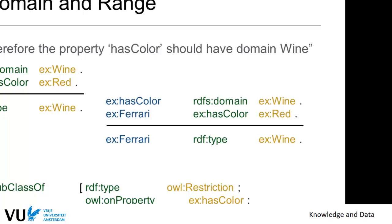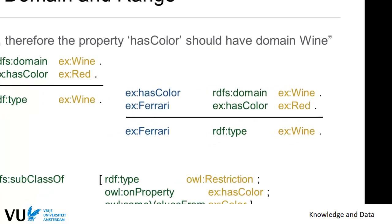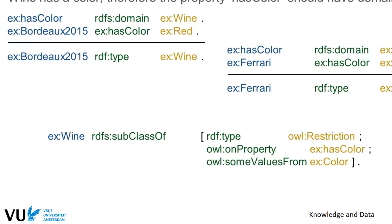Instead of the over-commitment of claiming everything that has a color must have the domain Wine, you can apply 'has color' only to objects of the Wine class by restricting the domain locally using a class restriction. Basically, you say everything that is a Wine has to be a subclass of a restriction on the 'has color' property, where every value from this property is a Color. This says the same thing but is restricted only to objects of type Wine.